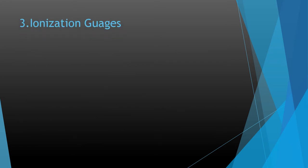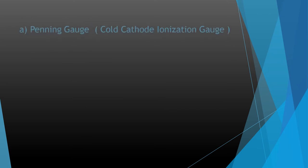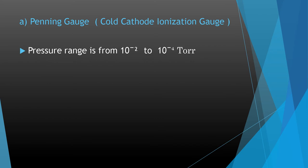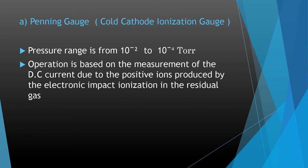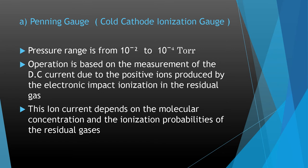The next type is ionization gauges, which are of two types: the cold cathode type and the hot cathode type. The cold cathode ionization gauge is also known as the Penning gauge. Its pressure range is from 10⁻² to 10⁻⁴ Torr. The operation is based on the measurement of DC current due to positive ions produced by electron-impact ionization in the residual gas. This ion current depends on the molecular concentration and the ionization probabilities of the residual gases.